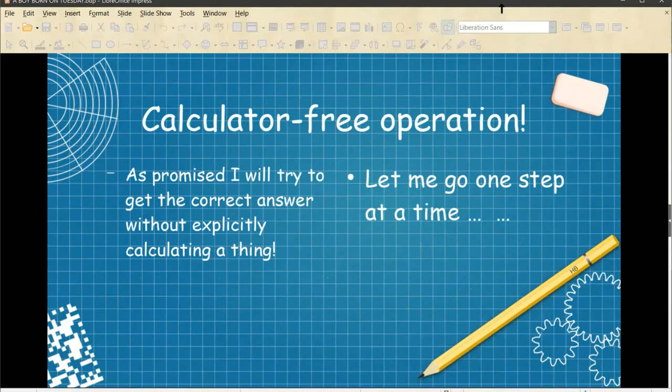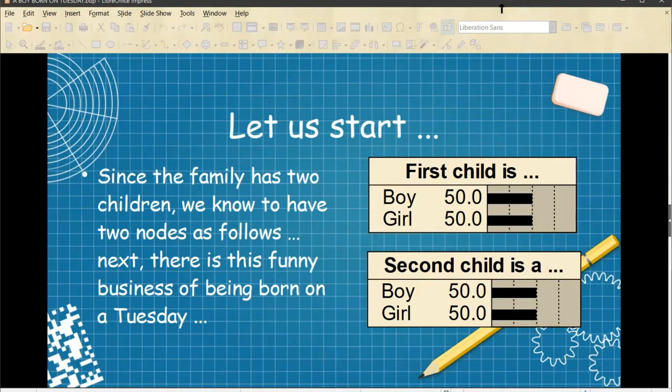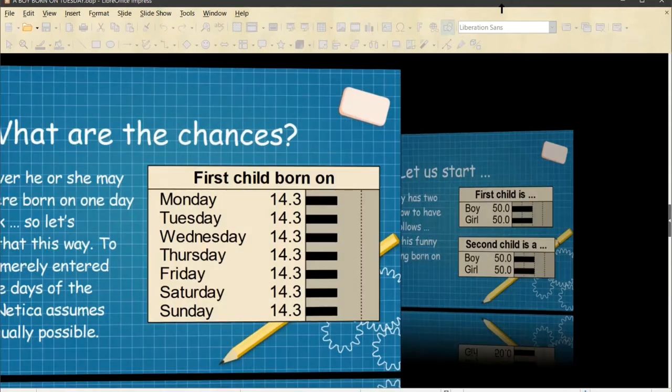Calculator-free operation. As promised, I will try to get the correct answer without explicitly calculating a thing. Let me go one step at a time. Since the family has two children, we know to have two nodes as follows. The first child is either a boy or a girl, and the second child is either a boy or a girl. Next, there is this funny business of being born on a Tuesday.